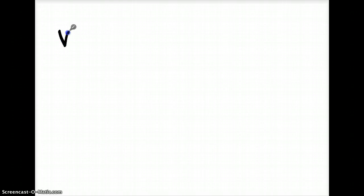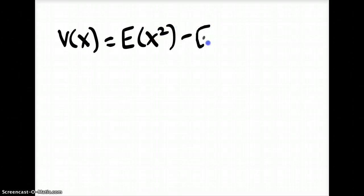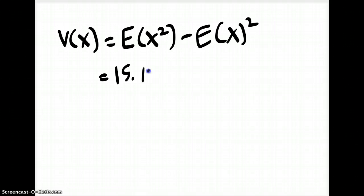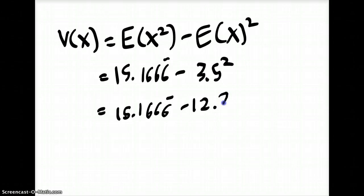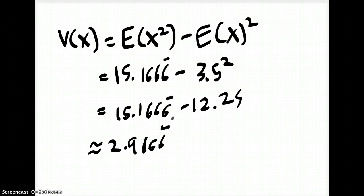Now all we need to do to calculate the variance is plug those numbers into the equation. That's equal to about 15.1666 minus 3.5 squared, which is equal to 15.1666 minus 12.25, which is about equal to 2.9166 repeating. So that would be the variance of tossing a die. As you can see, it's fairly large compared to the actual expected value of 3.5, because it's a uniform probability — so we're more likely to see that number deviate away. Also, there aren't many values to the random variable.